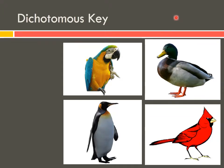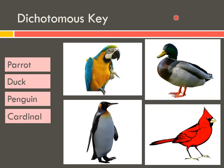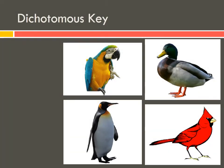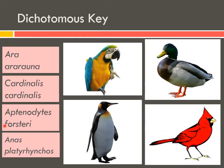If I was to show most of you these four pictures and these four words, we could figure out which word went with which picture just by the characteristics of the bird. For instance, most of us would know this one's a penguin, a duck, a parrot, and a cardinal. However, to show you the same four pictures but with their scientific names, would we be able to so easily identify which was which?